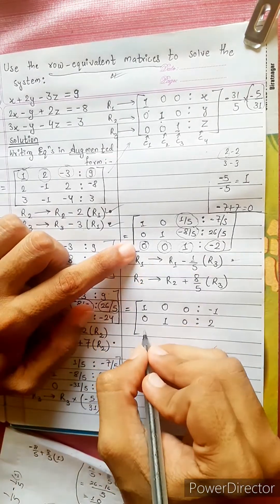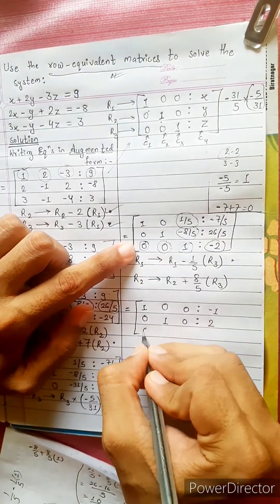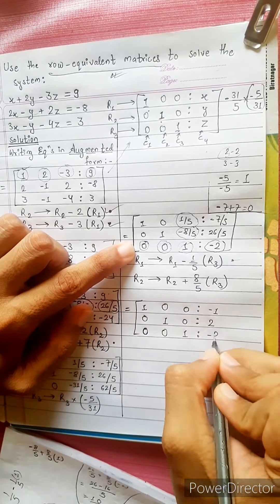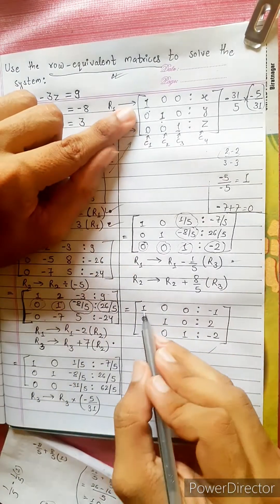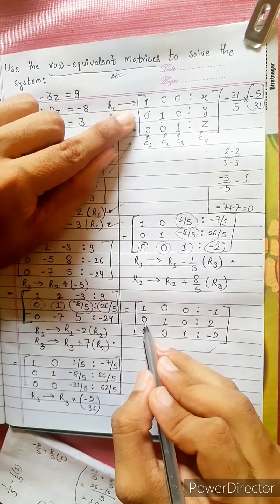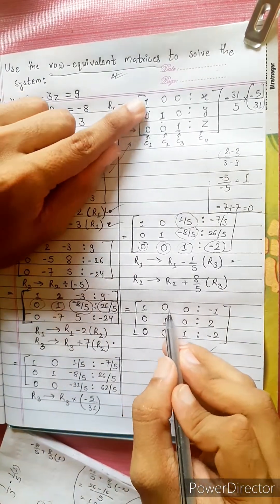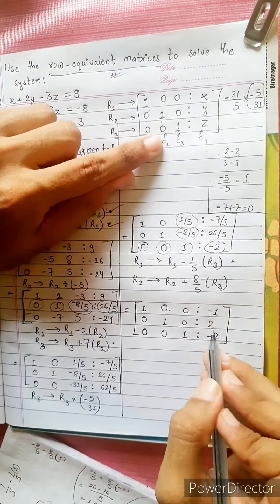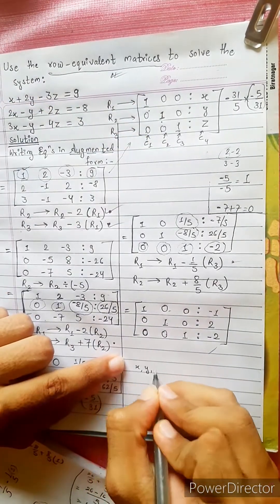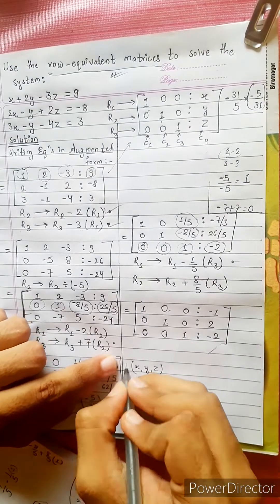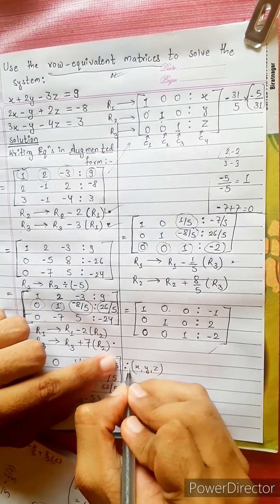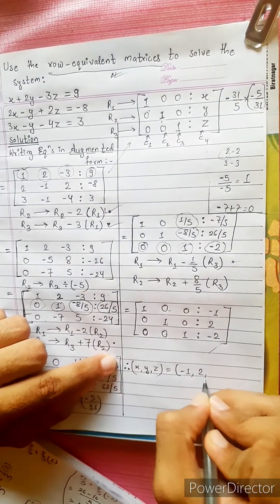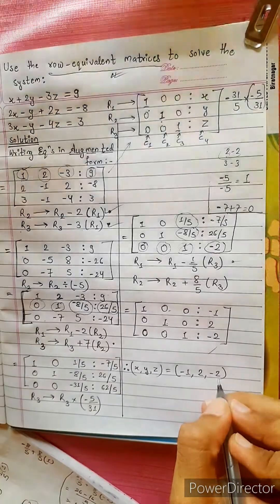0, 0, 1, minus 2. The matrix becomes 0, 0, 1; 0, 0, 0; 1. Therefore x, y, z equals 2, minus 1, minus 2. Answer: x, y, z equals (2, minus 1, minus 2).